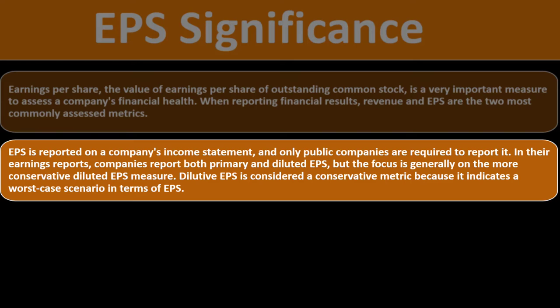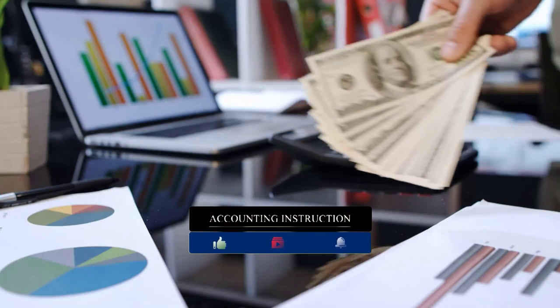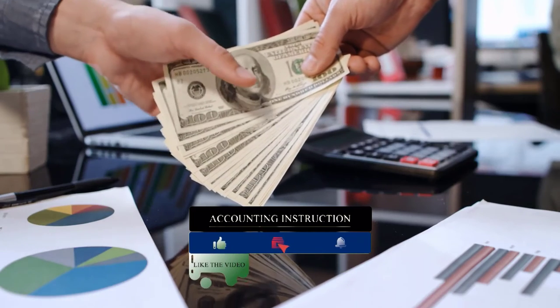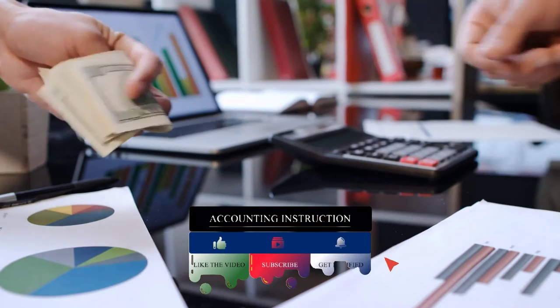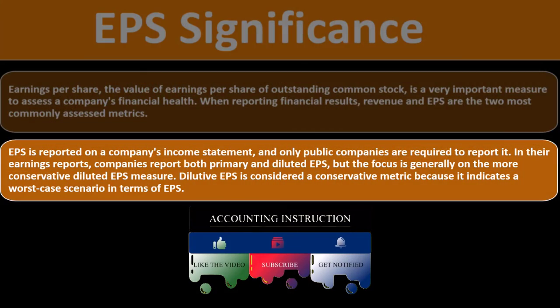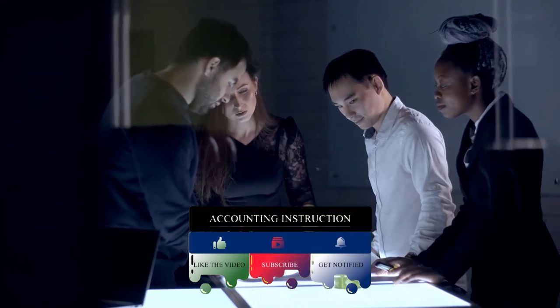The focus is generally on the more conservative diluted earnings per share. Diluted EPS is considered a conservative metric because it indicates a worst-case scenario in terms of earnings per share. A higher EPS number is better — more earnings per unit of share — but we want to take the conservative measure, and therefore analysts often put more focus on the dilutive earnings per share.